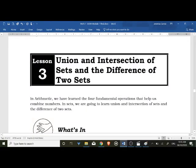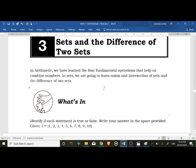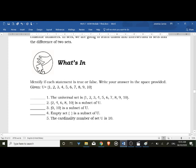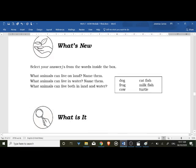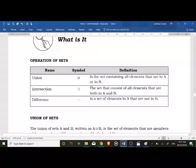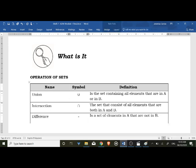Alright, Lesson 3 for Math 7 Module 1: union and intersection of sets and the difference of two sets. Just a quick review before we proceed in answering the activities. Under this lesson, we will discuss what these three operations of sets are all about. Union - i-combine mo lahat, isama-sama mo sila lahat, si A at si B. Intersection - yung common elements lang ni A at ni B.